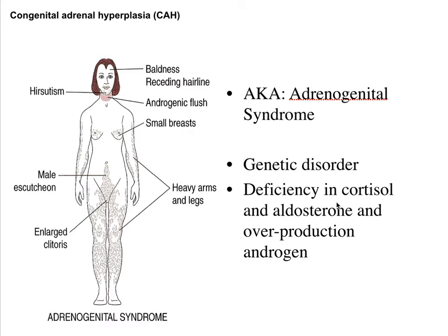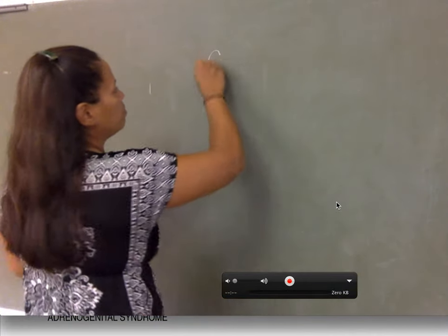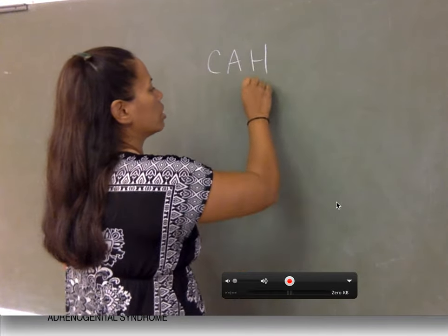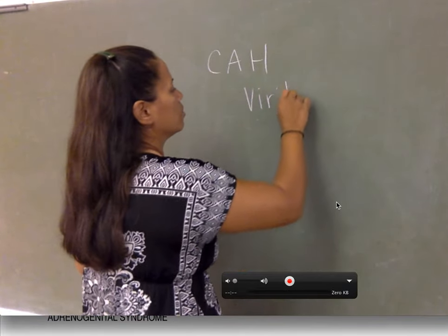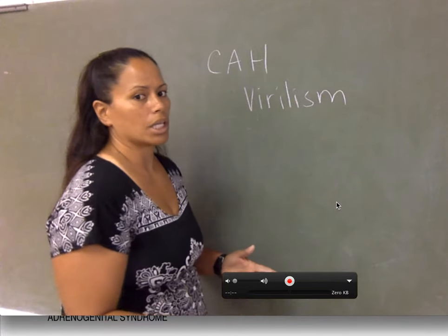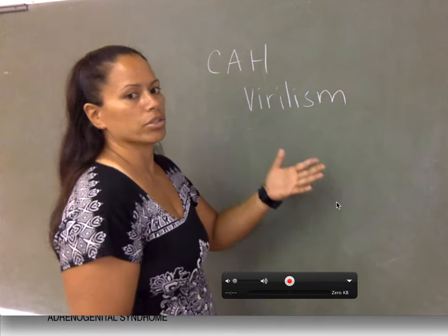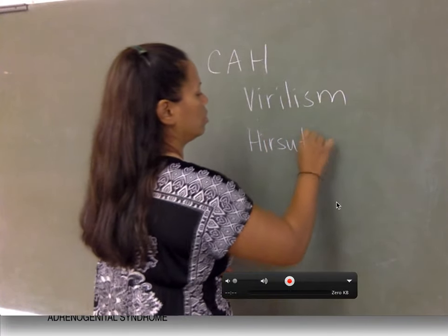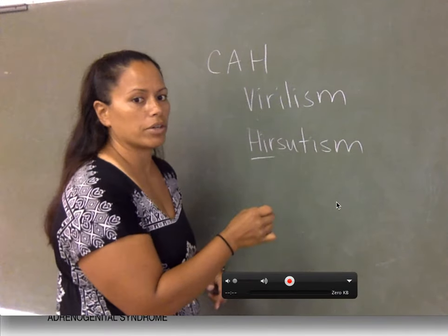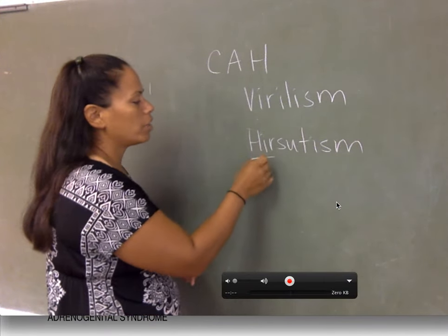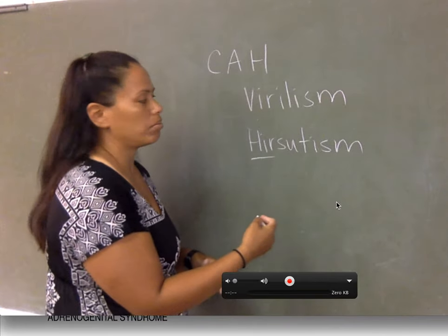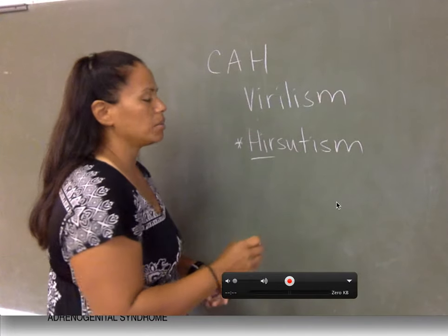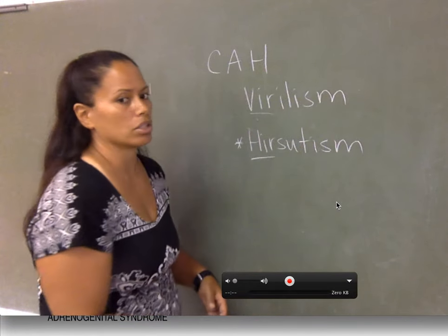Two key terms for congenital adrenal hyperplasia: virilism - meaning male features appearing on a female, including male pattern hair distribution and even male pattern baldness - and hirsutism, which specifically refers to excess hair. Virilism means she looks like a man; hirsutism is about the hair.